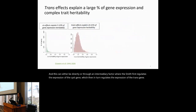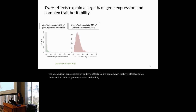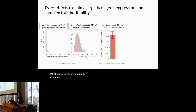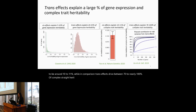For both computational and statistical reasons, efforts have focused more on mapping cis-genetic effects, despite the fact that trans-effects explain more than twice the variability in gene expression. Cis-effects explain 5 to 10% of gene expression heritability, while trans-effects explain 20 to 25%. Furthermore, trans-effects drive between 70 to nearly 100% of complex trait heritability, making them a key target for understanding complex trait genetics.